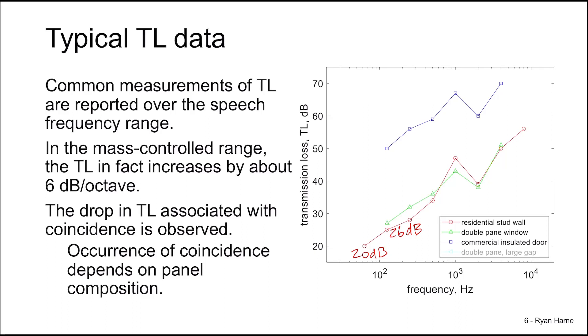Take for instance now, instead of a double pane window, we'll introduce a larger gap in between the two panes. This largely eliminates the coincidence drop, although there's still a plateau of the transmission loss in that same frequency region.